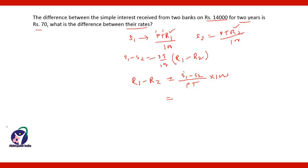S1 minus S2 is the difference between the interest, which is Rs 70. Principal amount is Rs 14,000, multiplied by time which is 2 years, multiplied by 100. Two zeros will get cancelled, another two zeros will get cancelled, 7 ones are 7, 7 twos are 14, so it will equal 1/4 percent. So 1/4 percent is 0.25 percent. The difference between the two rates is 0.25 percent.